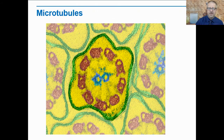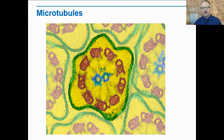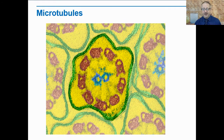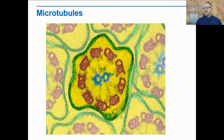The microtubules — the yellow things — are hollow structures made up of proteins known as tubulins. The microfilaments were actins; now we have microtubules made up of tubulins. In many cells they play critical roles in maintaining cell shape. Microtubules form the mitotic spindle, which we'll learn about when we talk about cell division. In animal cells, there are also structures called centrioles that are also formed from tubulins. Centrioles are not found in plants — only in animal and human cells.